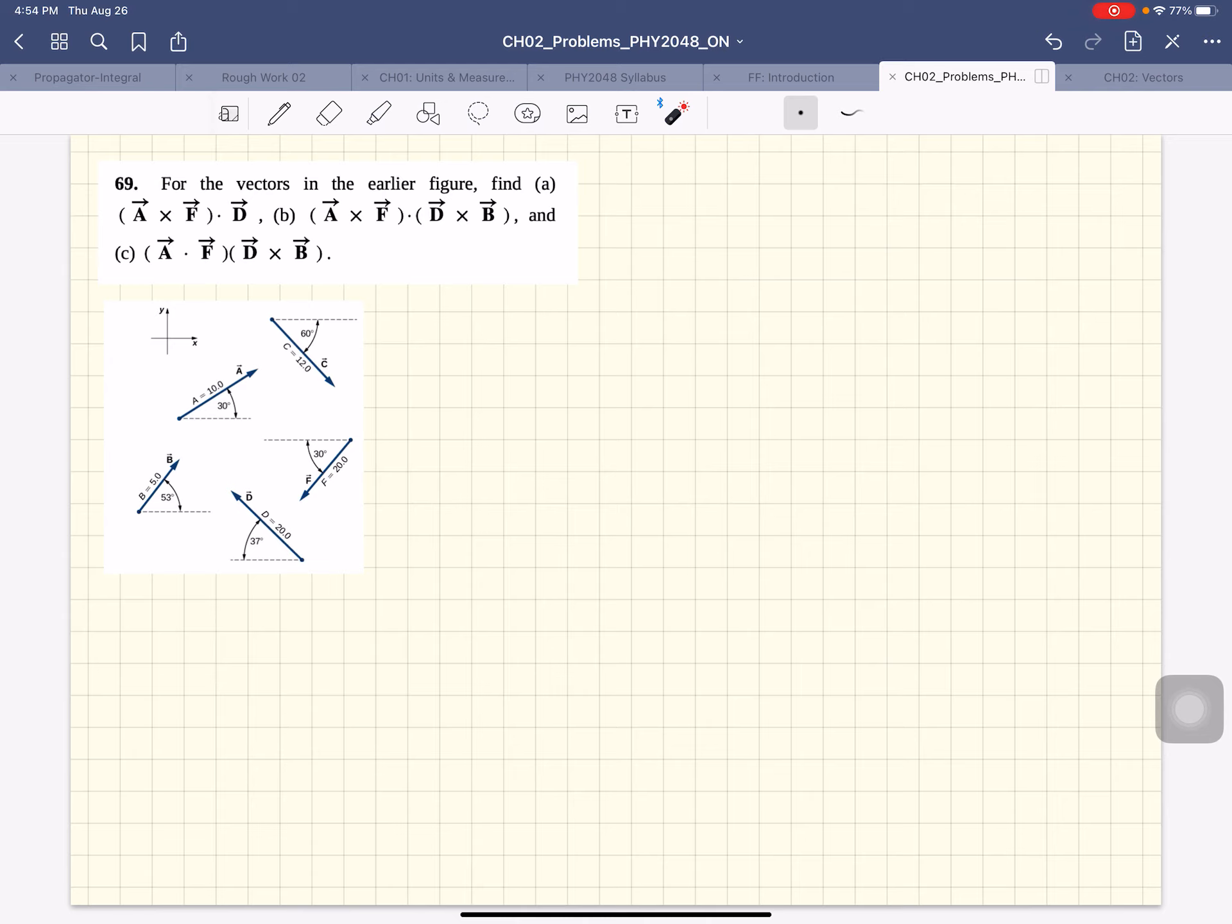Find their components. So we'll have to find the components of A, F, and D. So A is 10 cosine 30 i plus 10 sine 30 j.